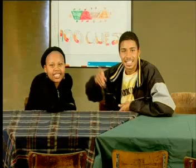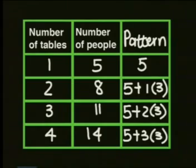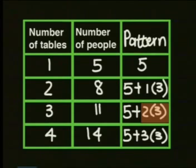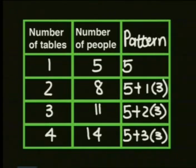We have three times three here, two times three here, and one times three over here. So that means the next one should be zero times three. You are absolutely right — it seems you are a numbers person, Gerard. Now let's describe what is happening in this pattern.